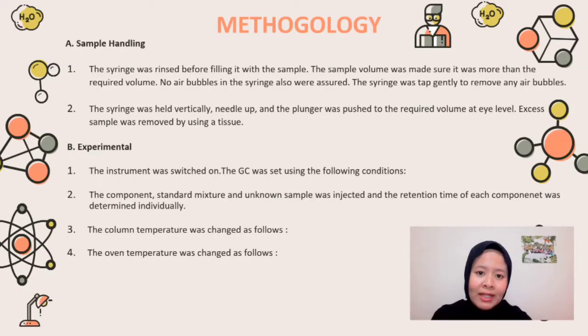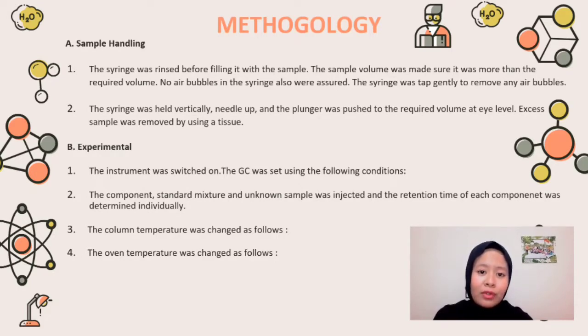The apparatus and chemicals we need are: beaker, syringe, dropper, 2-propanol, butanol, a standard mixture of 2-propanol and butanol, and an unknown sample.